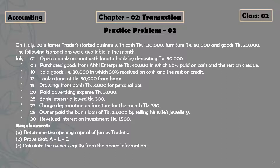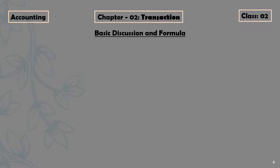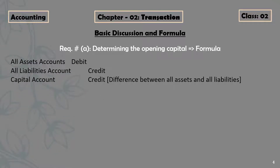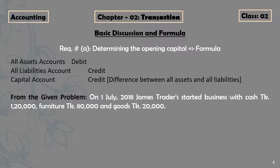Before solving this problem, I'd like to discuss some basic tips and formulas for requirements A and C. In our last class we saw how to solve requirement B in tabular format. Now let's study the basics of solving A and C. For requirement A — determining the opening capital — the formula is: all asset accounts are debited, all liability accounts are credited, and capital equals the difference: total debits minus total credits.